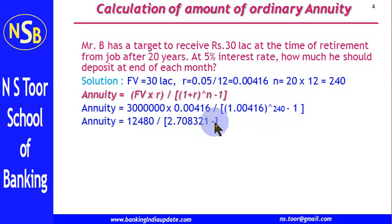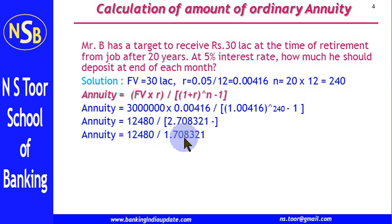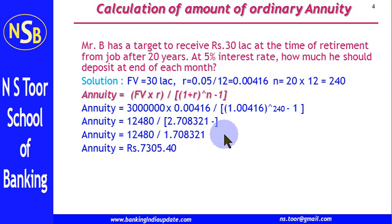The minus 1 should be there. So this value minus 1 gives us 1.708321. Now we can calculate the value. This is the amount of the monthly installment.